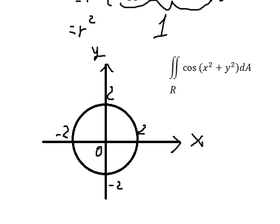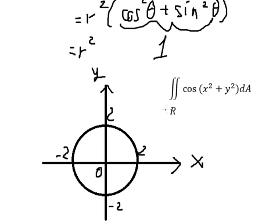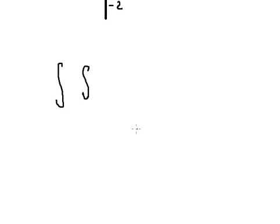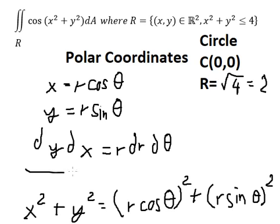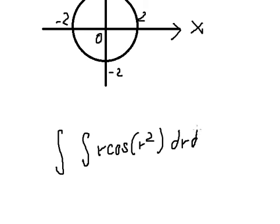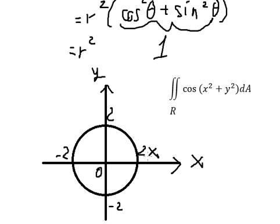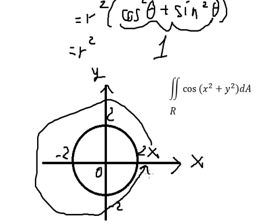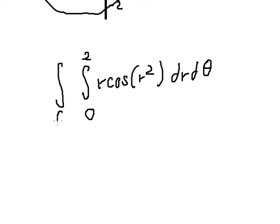Now we set up the double integral. We change x squared plus y squared for r squared, and dA we change to r dr d theta. The radius r goes from 0 to 2. For d theta, we go one full circle, starting from 0 and stopping at 2 pi. Now we need to calculate the inner integral first.